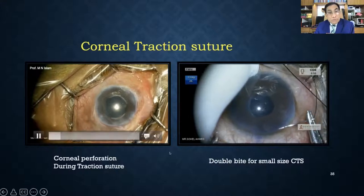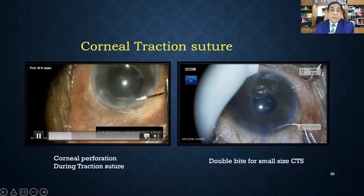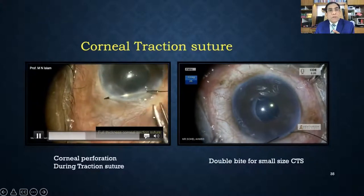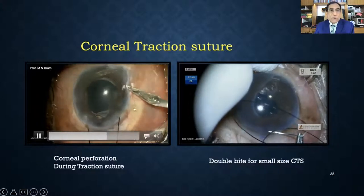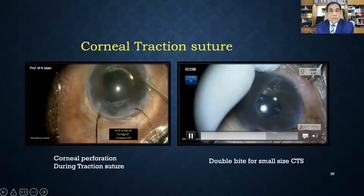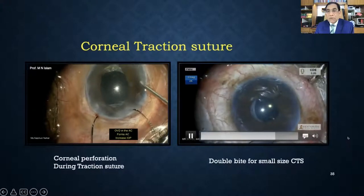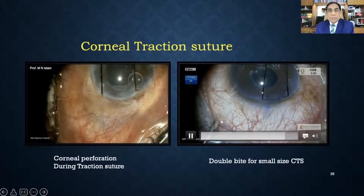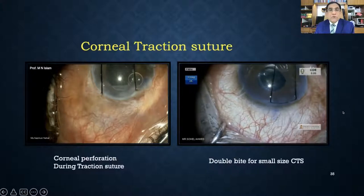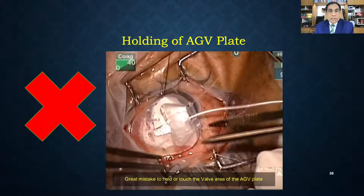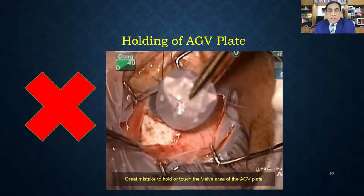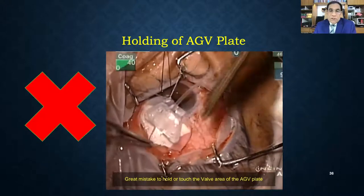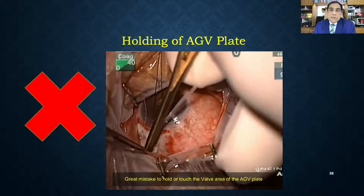Corneal traction suture perforation is rare but can happen. If the eye becomes very soft, inject high-density viscoelastic into the anterior chamber to maintain it. If one bite is difficult, make two bites for traction with 6-0 Vicryl, 6-0 silk, or superior rectus bridle suture. Mostly I use a corneal traction suture. Very important: never hold the valve in the bulb area — this damages the valve mechanism.